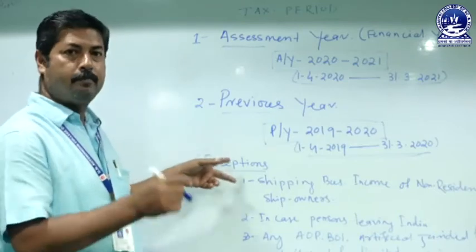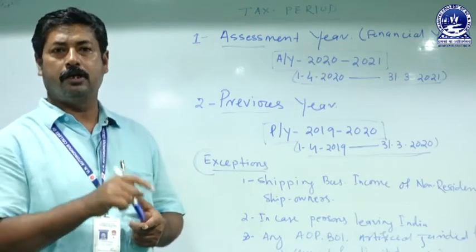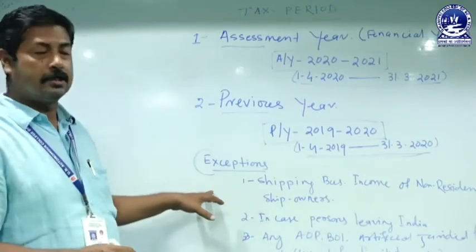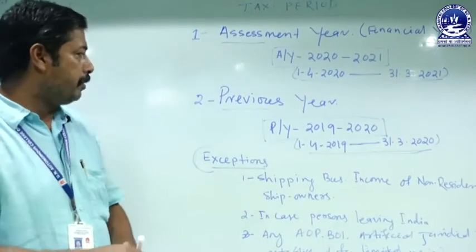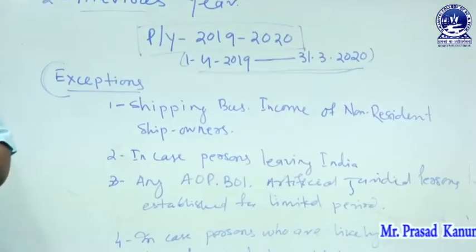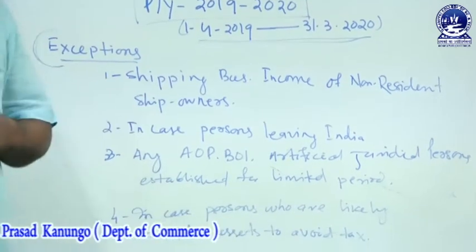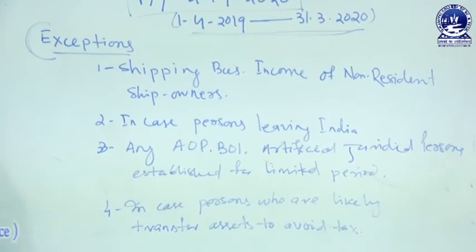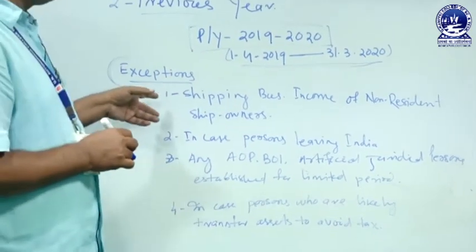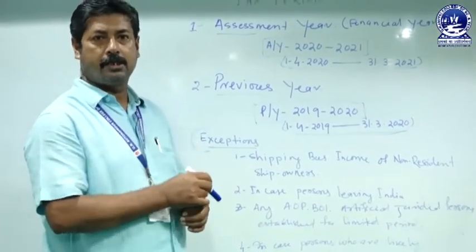However, there are some exceptional cases under income tax law. In these cases, the person derives income and is liable to pay the tax in the same year. The first exception is the shipping business of non-resident ship owners. If a non-resident ship owner carries on shipping business in Indian ports — carrying passengers, livestock, mail, or goods — but has no representative in India, they are liable to pay the tax in the same year in which the shipping business derives income.